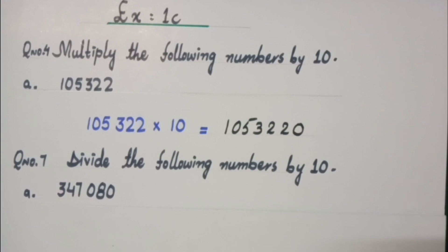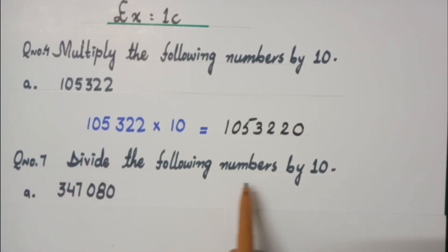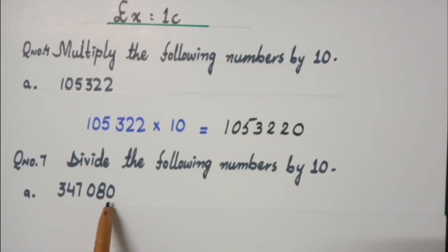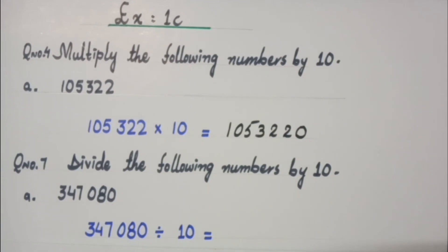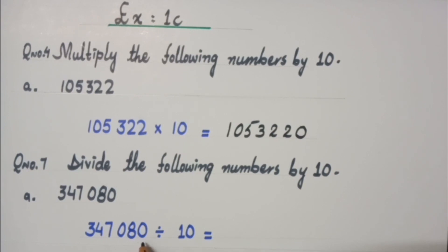Now let's learn division by 10. We are going to solve question number 7 from your book: divide the following numbers by 10. The number is 347,080. So what was the rule of division? Do you remember? First of all, remove zeros. How many zeros are in 10? There is one zero. Can you see any zeros in the original number? Yes, it also has one zero at the end.